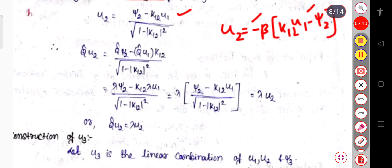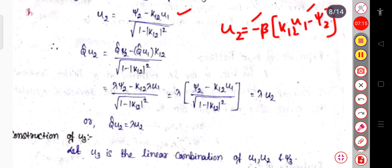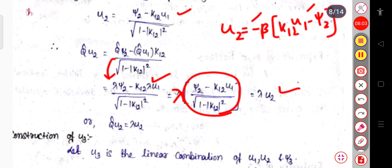When Q̂ operates on u₂, we get Q̂u₂ = (Q̂ψ₂ − k₁₂ Q̂u₁) / √(1 − |k₁₂|²). Since Q̂ψ₂ = λψ₂ and Q̂u₁ = λu₁, this becomes λ(ψ₂ − k₁₂u₁) / √(1 − |k₁₂|²) = λu₂. So the eigenvalue for u₂ is also λ.